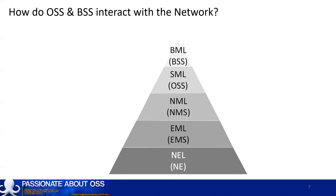Notice that the brackets denote the approximation of terminology, where BSS is customer facing. OSS are the umbrella operational tools that push customers onto the network and also feed information back to operational staff and customers from the network. The NMS and EMS tend to be more proprietary systems, and the network elements are the actual network devices that contain network configuration.